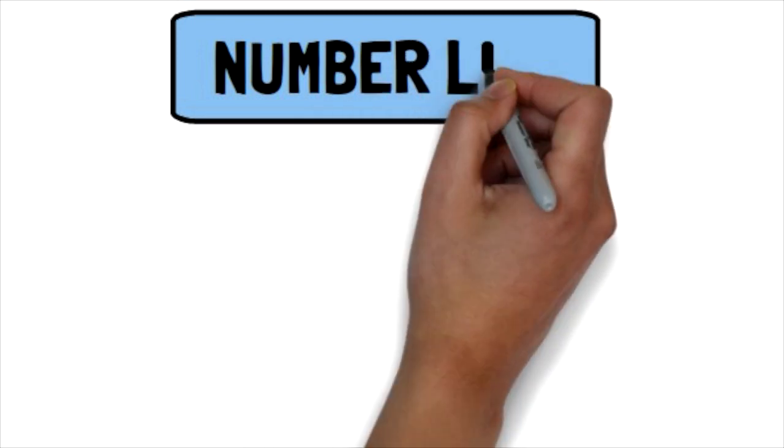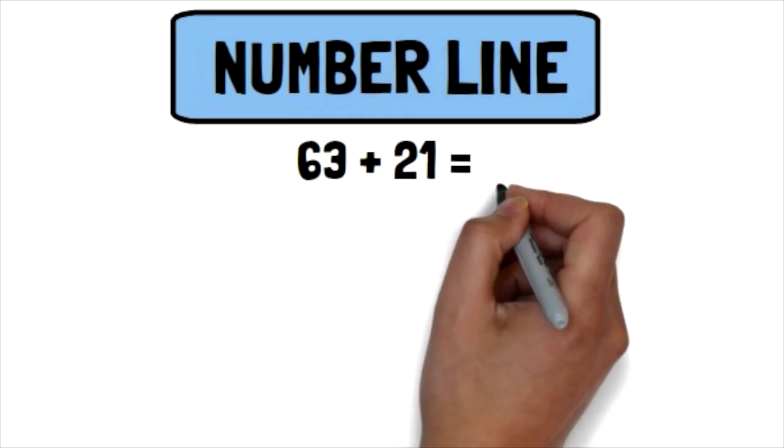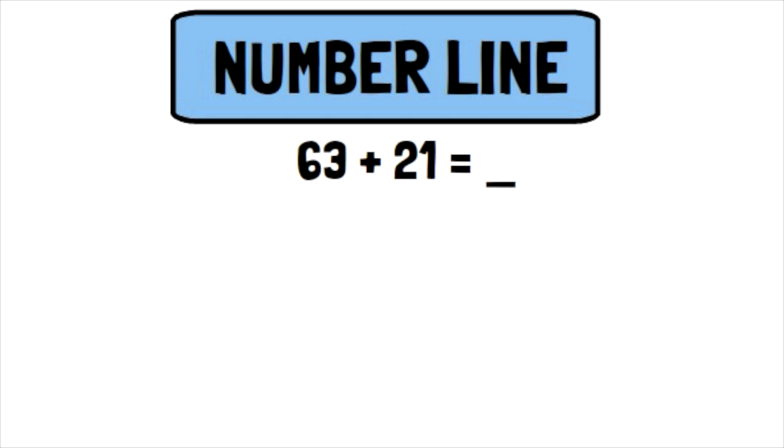The last strategy I'm going to give to you is called the number line strategy. This is probably one of the more abstract of all of the strategies, because your child actually has to create their own number line to solve the problem. They have to use their understanding of place value in order to know how to break these numbers down into tens and ones. They need to know how many times they need to hop on the number line. So it is a little bit more advanced, which is why I put it at the end.